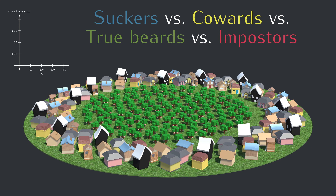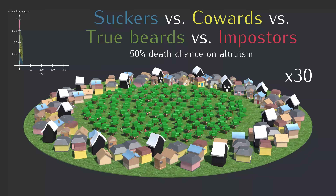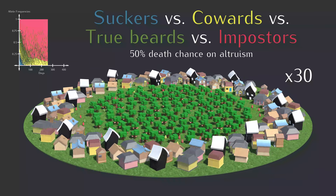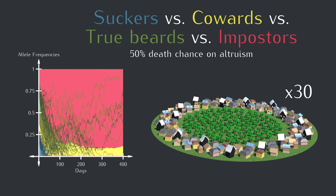To set up the next sim, we'll start with equal numbers of all these types and go back to the 50% death chance. Let's skip ahead and run it 30 times and look at the averages. Showing all the lines from every run just gives us a Jackson Pollock painting, so let's look at just the averages.